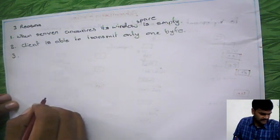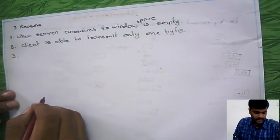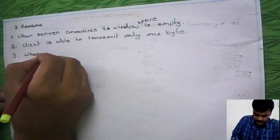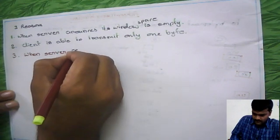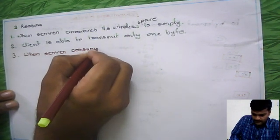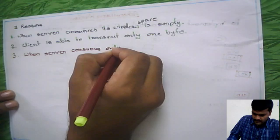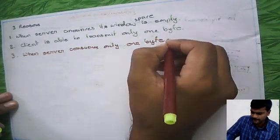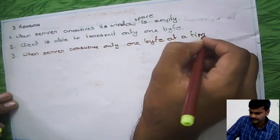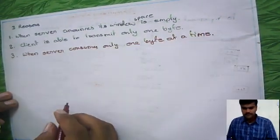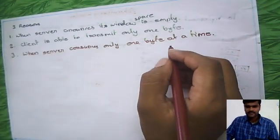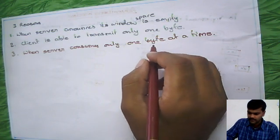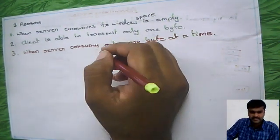Next one is when server consumes only one byte at a time. Consumes only one byte at a time. If suppose server is consuming only one byte, accordingly you have to set the receiver size, that window size. So in these three cases there may be chance of happening Silly Window Syndrome.